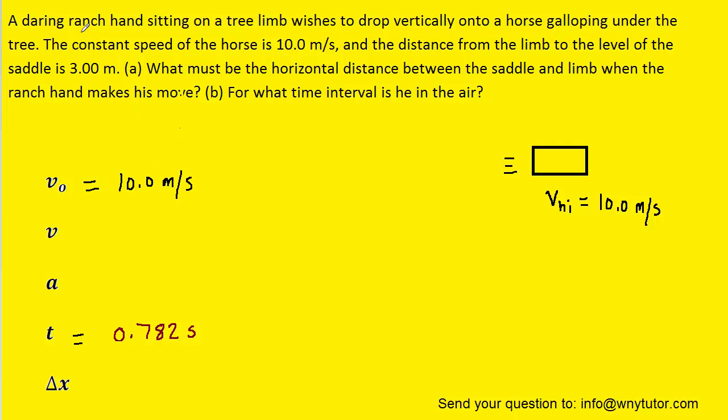Notice that the question states that the speed of the horse is constant. So that means that the acceleration is equal to 0 meters per second squared. And we're being asked to calculate delta x, which would be the horizontal distance that the horse travels in order to reach the ranch hand.